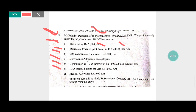HRA received during the year is Rs. 12,000 per month. Medical allowances Rs. 2,000 per month. The actual rent paid by him Rs. 10,000 per month.